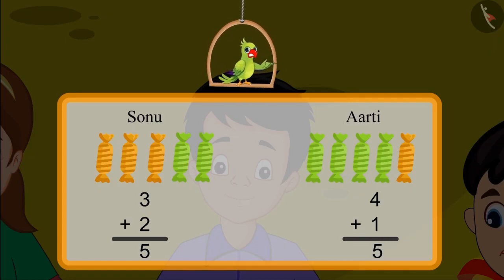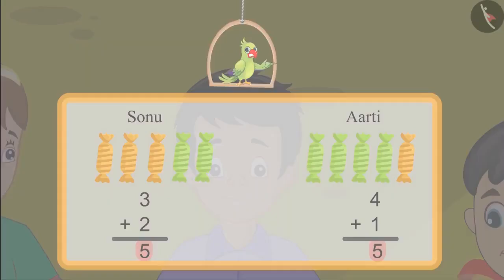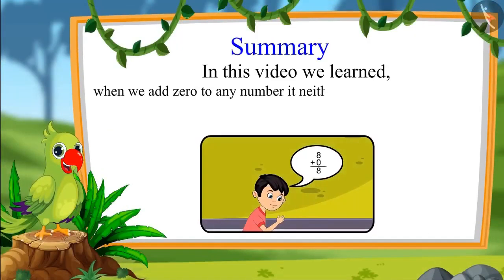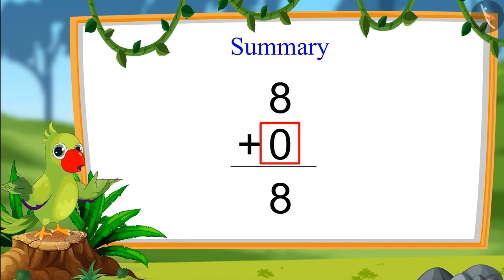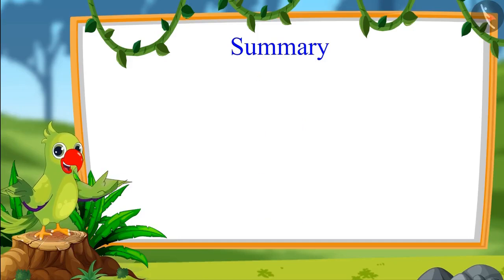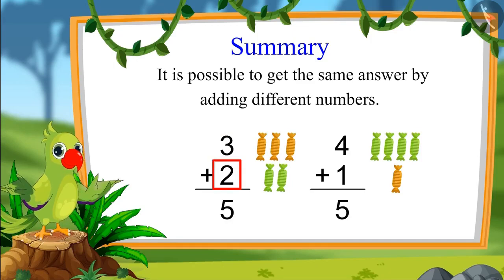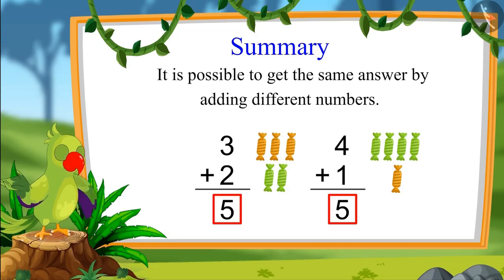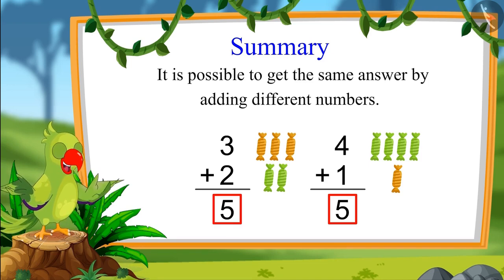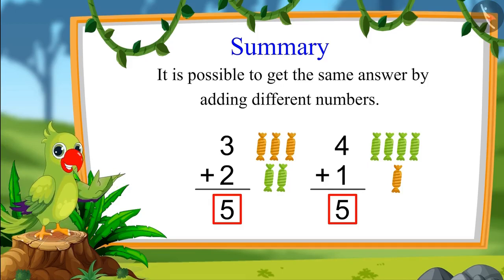This means Sonu and Aarti both got exactly the same number of toffees — it is possible to get the same answer by adding different numbers! In this video we learned that when we add zero to any number it neither increases nor decreases — for example, zero added to eight gives eight. We also saw that different combinations can give the same answer: three plus two equals five, and four plus one also equals five. I hope you have learned how to add numbers in an organized way. Bye-bye children!